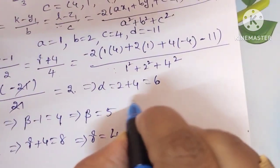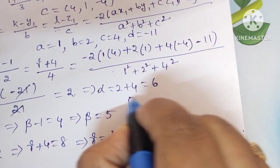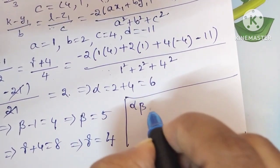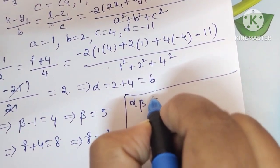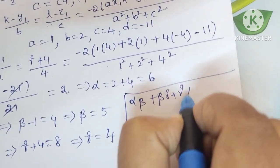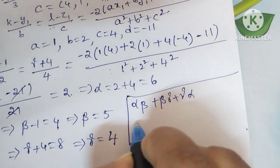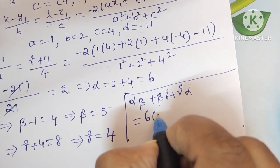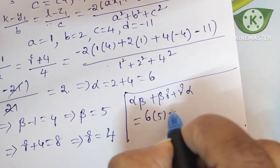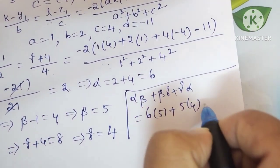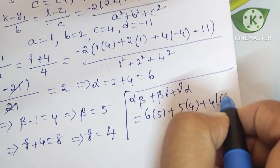Now substitute into the expression: alpha·beta + beta·gamma + gamma·alpha = (6×5) + (5×4) + (4×6) = 30 + 20 + 24 = 74.